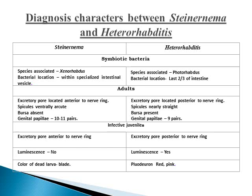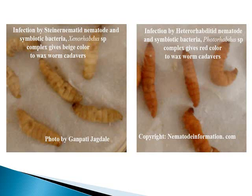Diagnostic characters between Steinernema and Heterorhabditis: In Steinernema adults, the excretory pore is located anterior to the nerve ring; spicules are ventrally arcuate; bursa is absent; and genital papillae are at the 10th or 11th pair. In Heterorhabditis, the excretory pore is located posterior to the nerve ring; spicules are nearly straight; bursa is present; and genital papillae are at the 9th pair. For infective juveniles, in Steinernema the excretory pore is anterior to the nerve ring, whereas in Heterorhabditis it is posterior. Luminescence is never shown by Steinernema, but Heterorhabditis does show a luminescent, shining effect. The color of dead larvae is brick-red in Steinernema, but in Heterorhabditis it is a purplish-red or pinkish-red.